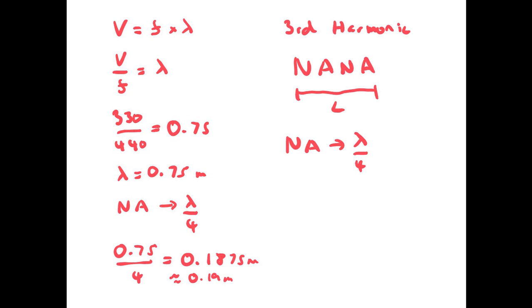And, again, from a node to an antinode is a quarter of a wavelength. So, that means we've actually got three quarters of a wavelength. And that's going to equal 0.75 times 3 divided by 4, which gives us 0.56 m. That's where we'll get our third harmonic resonance.